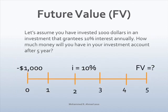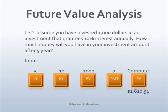Assume you have invested $1,000 in an investment that guarantees 10% annually. How much money will you have in your investment account after five years? The first step is to draw a timeline. The time period is five years, money is deposited at period zero, the interest rate is 10%, and the question mark is on the right-hand side. It is a future value analysis.